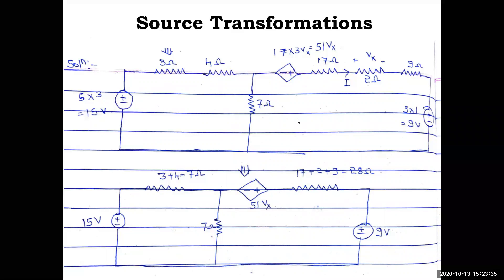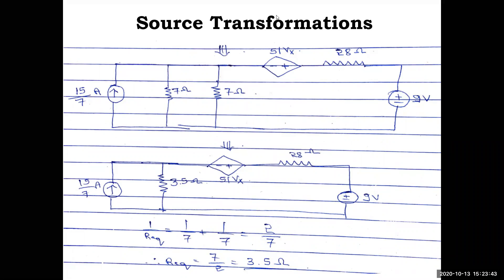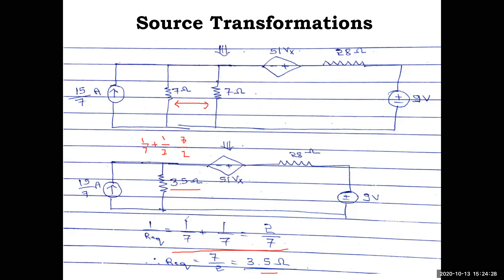Pausing to note down the circuit. Converting the 15V source with 7 ohm: current = 15/7 amps, placed in parallel with 7 ohm. The existing 7 ohm in that branch is also in parallel, so two 7 ohm resistors in parallel: 1/R_eq = 1/7 + 1/7 = 2/7, so R_eq = 7/2 = 3.5 ohm. The rest of the circuit remains unchanged.